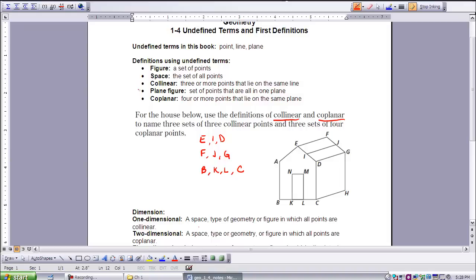Look down here below. B, K, L, and C all lie on the same line. Therefore, all three sets are considered to be collinear points. This is a set of collinear points, this is a set, and this is a set.